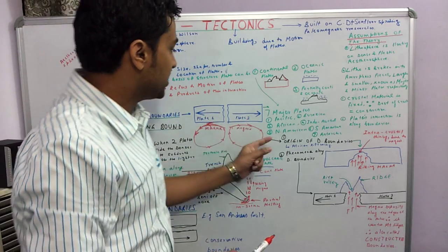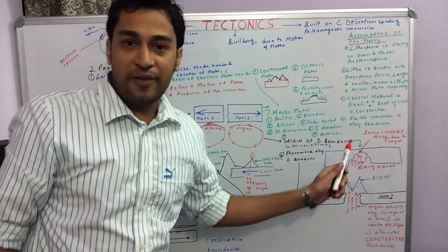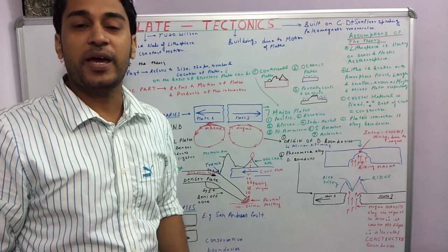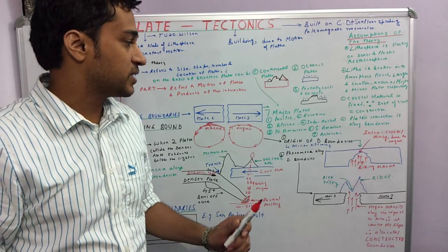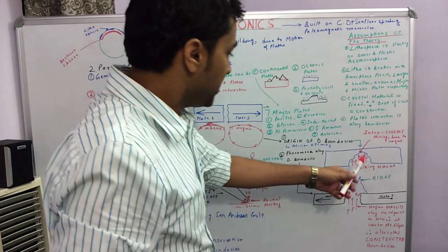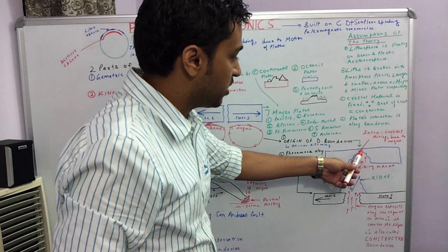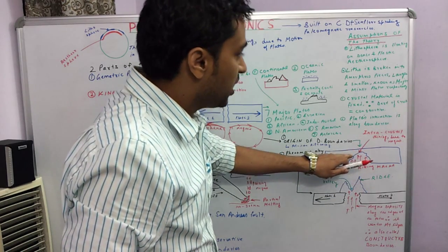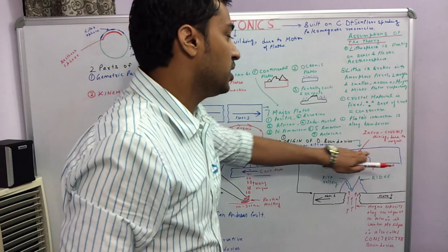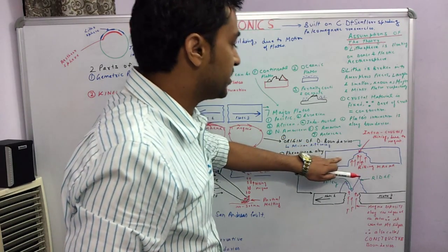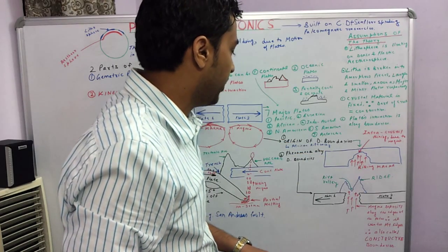Now we will see the origin of the diverging boundaries. The diverging boundaries originate by a phenomenon called intra-crustal thinning. This happens when rising magma eats away part of the crustal material of a plate and it leads to its thinning, and ultimately the two plates separate. This leads to the development of diverging plate boundaries.